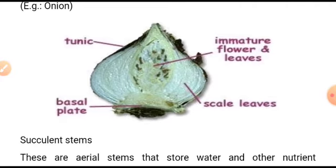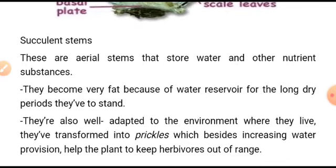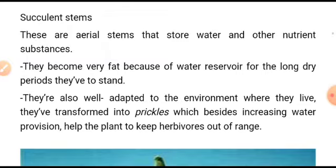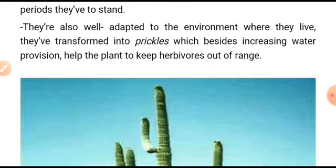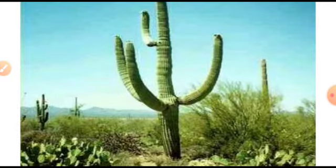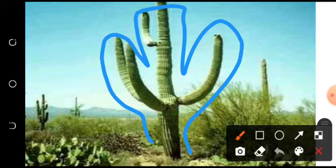There are what you call succulent stems. These are aerial stems that store water and other nutrient substances; they become very fat because of water storage for the long dry period. Succulents are well adapted to the environment where they live. They have transformed into structures which increase water provision and help the plant keep herbivores out of range.